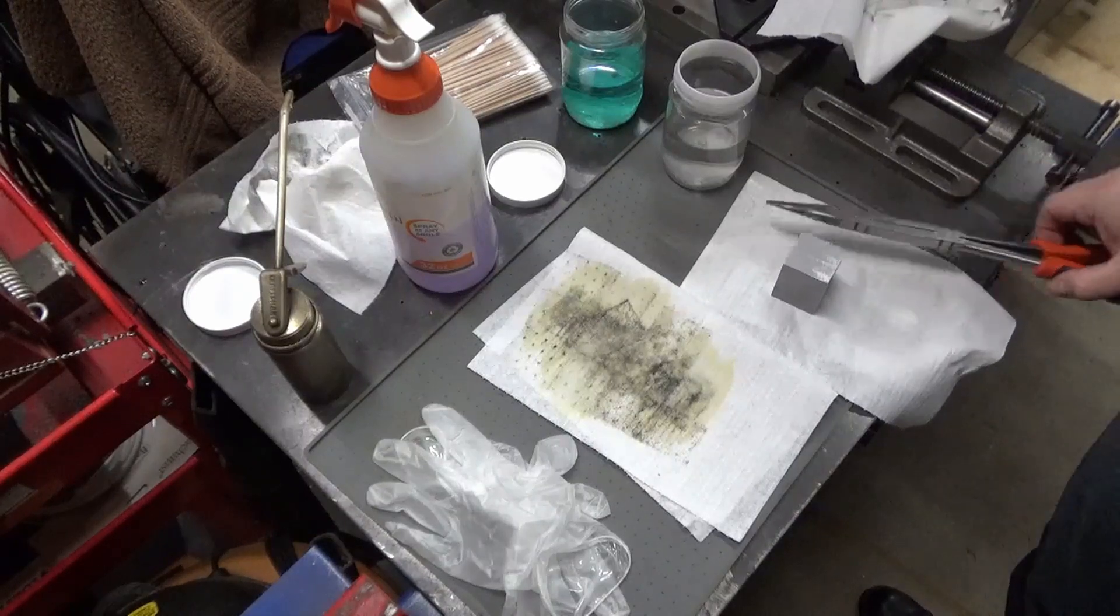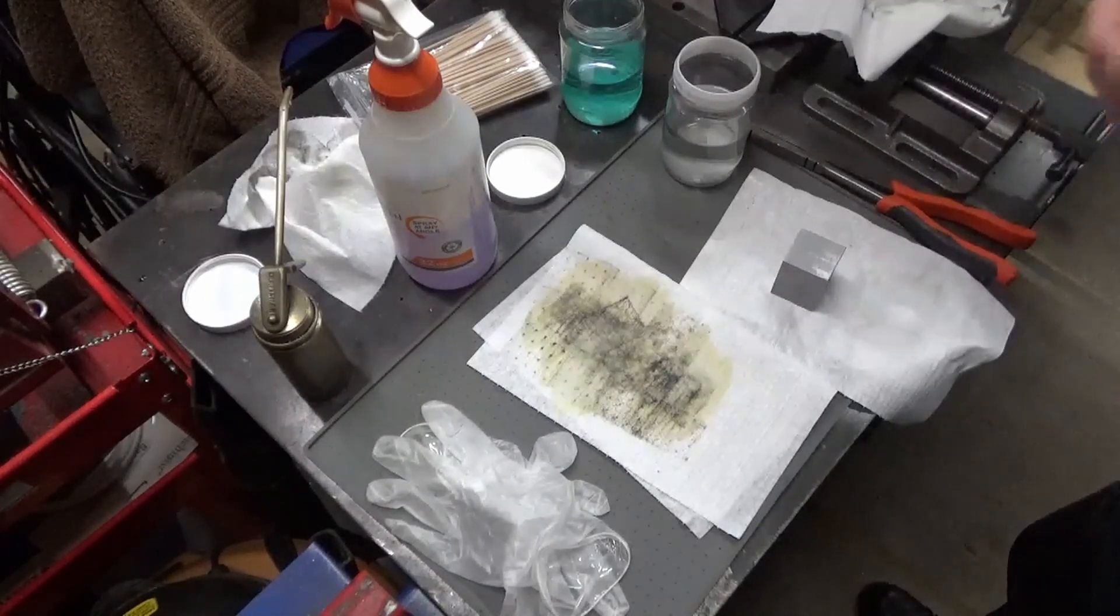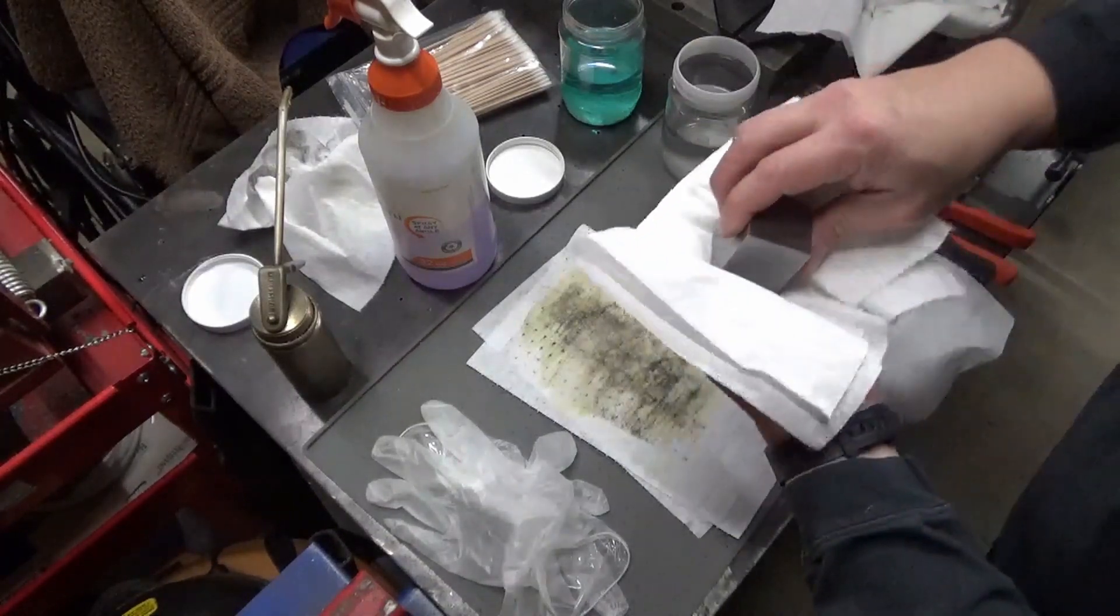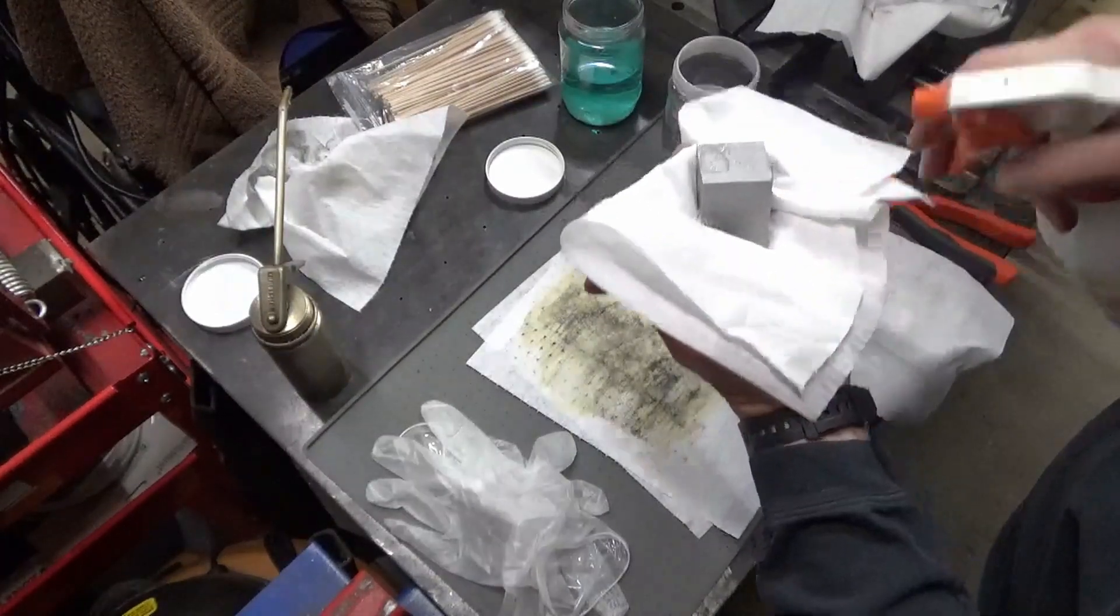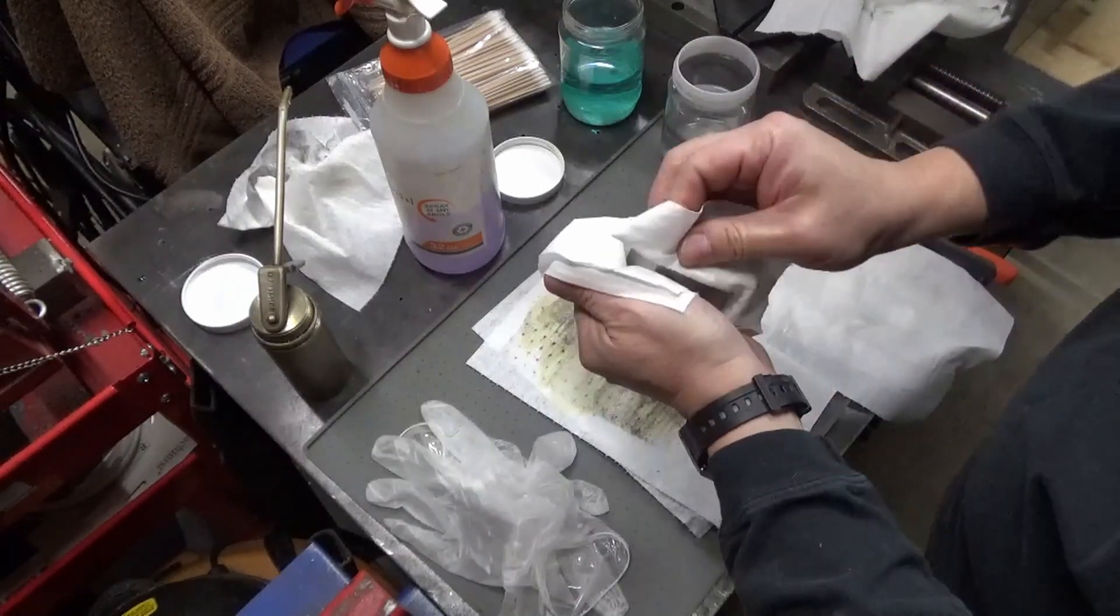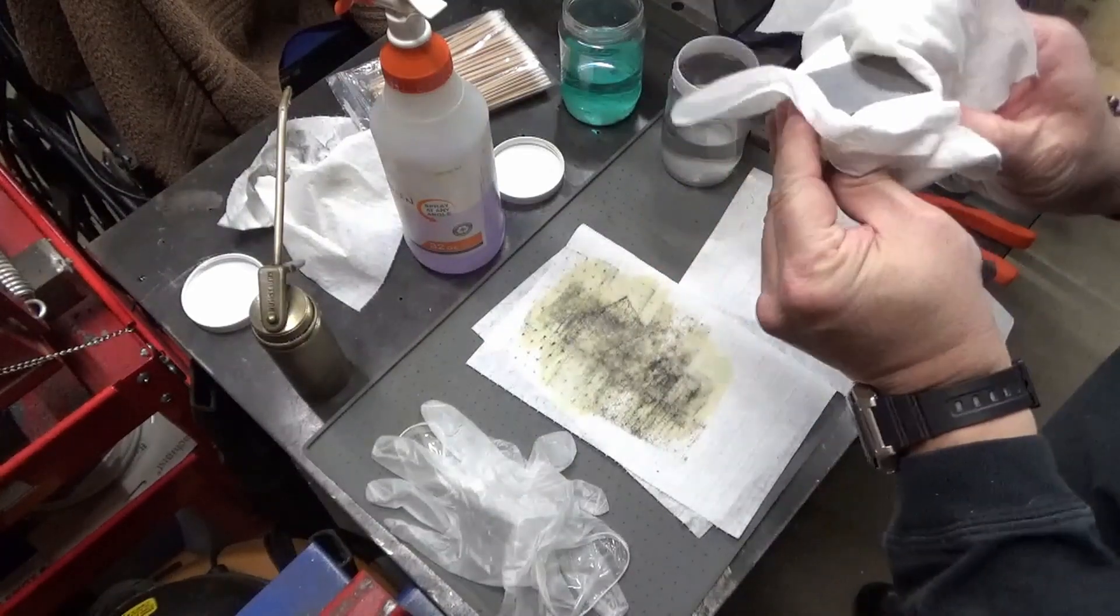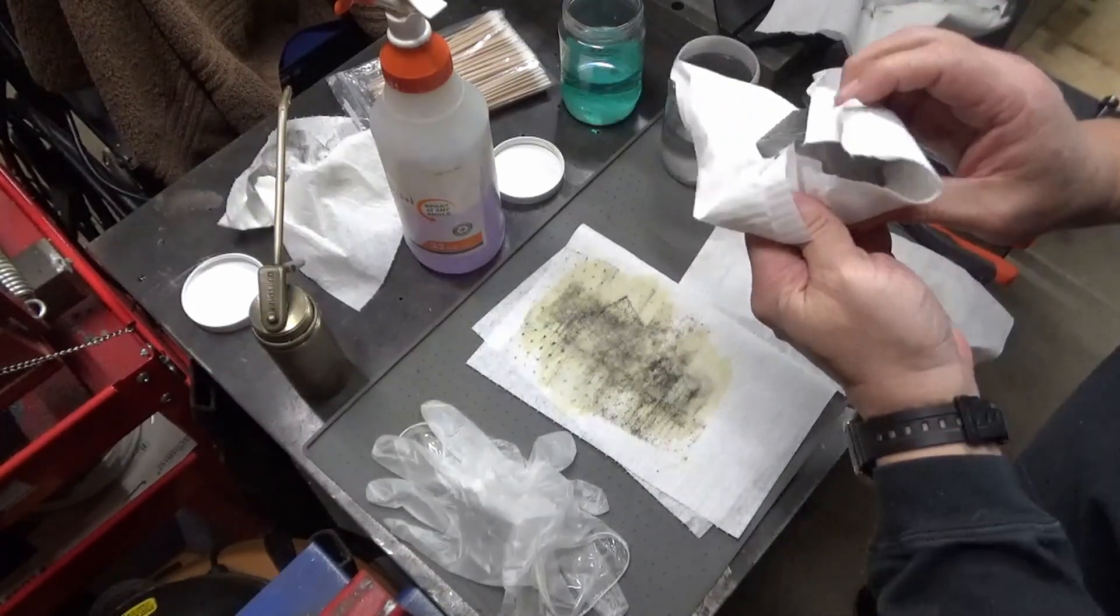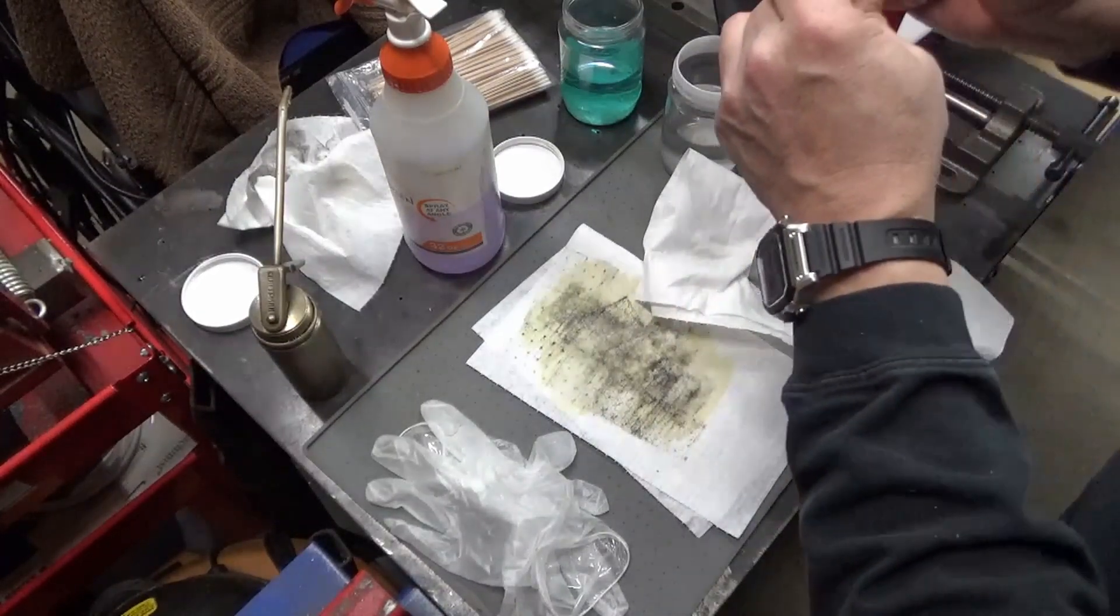I've got the blocks all machined, now I'm going to chemical blue them. Pardon the noise in the background, that's the fan running to keep the heat circulating in the garage. I'm just going to wipe it down real quick with a degreaser, this is just simple green. Now it's wiped down, I'm going to drop it in the container of acetone.